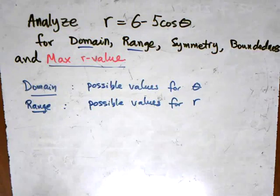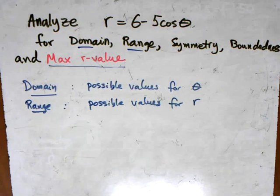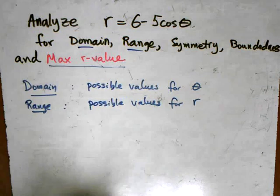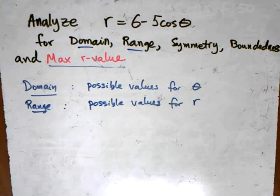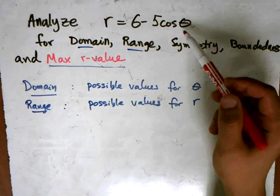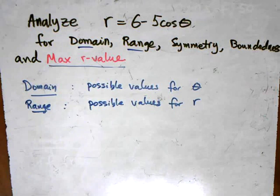Let's first start with our domain. We look at the function 6 - 5cos(θ) and you ask yourself, what can you put in for θ? Can you put anything? A negative number, a positive number,